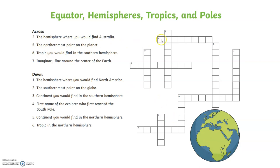So we go to the puzzle and we need to put in the word 'southern.' You fill in the squares and it should look like that — southern. The hemisphere where you would find Australia is the southern hemisphere. Number five across is right here.